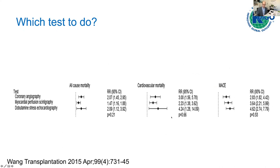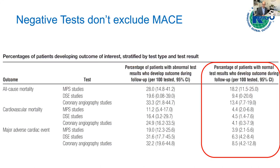Which tests should we do? We've got quite good data showing that coronary angiography, or less invasively myocardial perfusion scintigraphy or dobutamine stress echocardiography, strongly predict the incidence of all-cause mortality and in particular cardiovascular mortality post-transplant, and even more strongly major adverse cardiac endpoints post-transplant. However, a negative test does not exclude having a major adverse cardiac event in the peri-transplant period, and that goes for all studies.